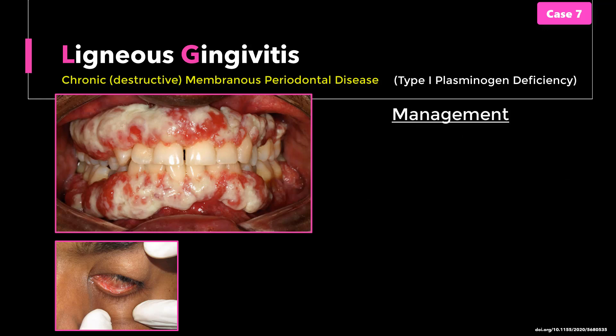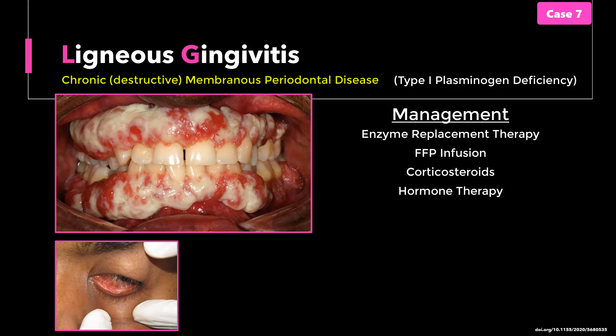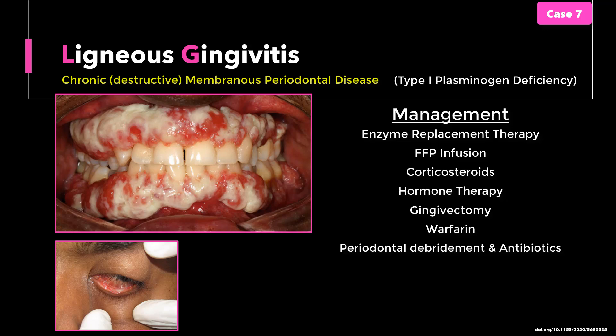The definitive treatment for type 1 is recombinant plasminogen replacement if accessible. Other modalities include infusion with fresh frozen plasma to replenish plasminogen levels and aid dissolution of the ligneous pseudomembranes. Anti-inflammatory agents and corticosteroids will help control systemic inflammation incited by fibrin deposits. Hormone therapy with estrogens and progesterone may enhance plasminogen levels. Gingival enlargement may need to be excised as a temporary measure but will recur if the systemic deficiency persists. Maintenance of good oral hygiene is imperative. Warfarin, which inhibits the coagulation cascade, prevents fibrin clot formation and has been used successfully. Antibiotics are also recommended to control local infection. As this is a multi-systemic disorder, review by relevant specialists is important.